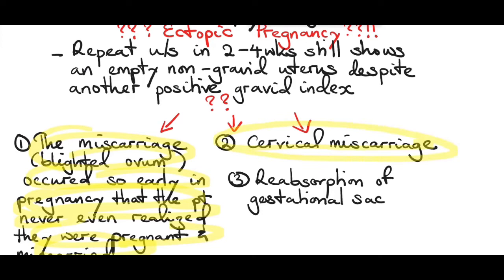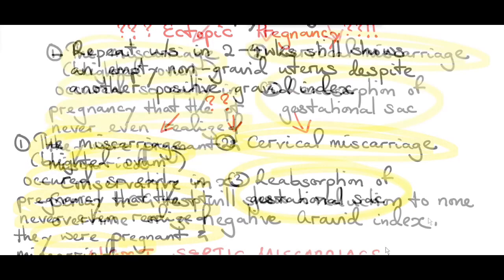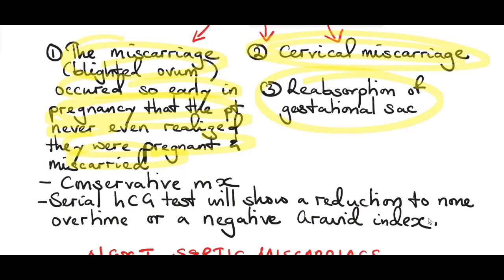Second, it could have been a cervical miscarriage. A cervical miscarriage happens when there's no cervical dilatation, so the abortus — the expelled formation — is stuck between the internal cervical os and the external cervical os. The third explanation is reabsorption of the gestational sac.